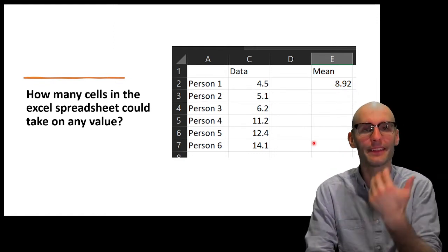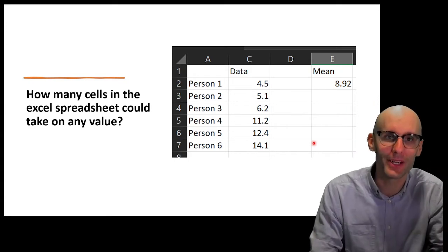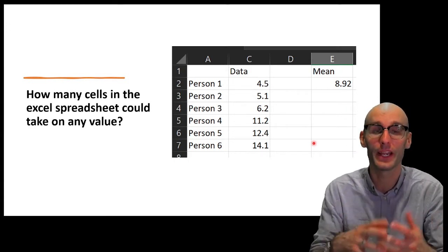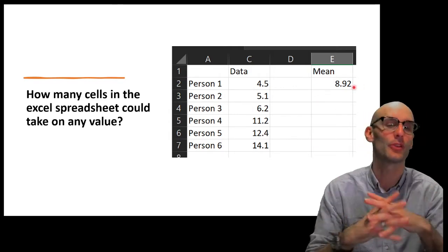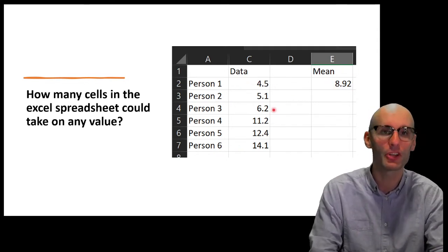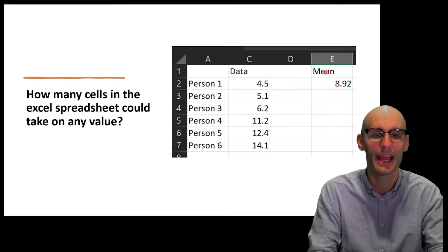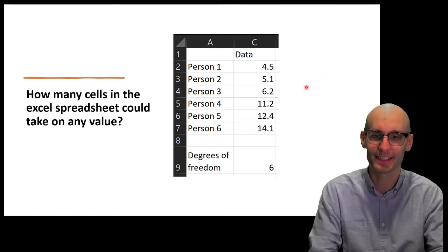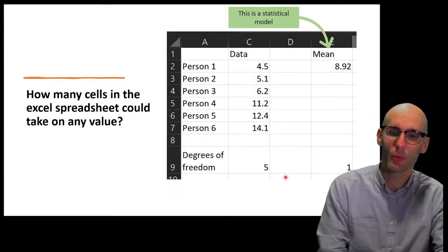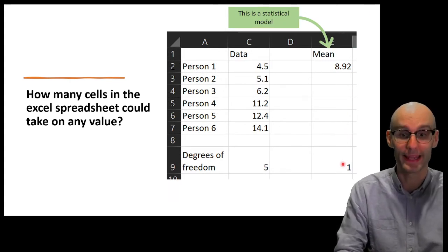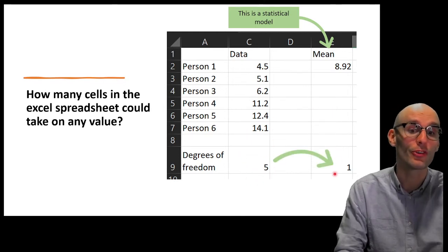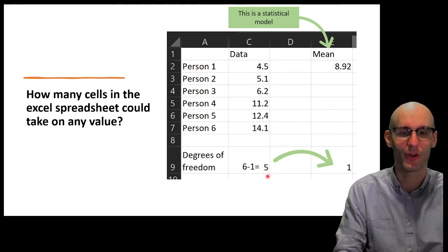What we can say is that the statistical model used up a degree of freedom in the data. So often we talk about the degrees of freedom in the statistical model, which is now one, because this mean could take on any value. So now there is one degree of freedom in the model and only five degrees of freedom in the data, because we have applied that statistical model. How many degrees of freedom in the data? Six. How many in the statistical model? One. So the data goes down by one — we've stolen a degree of freedom into the statistical model. Six minus one equals five.